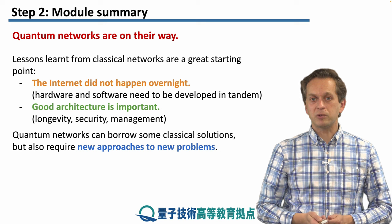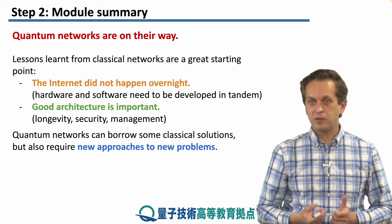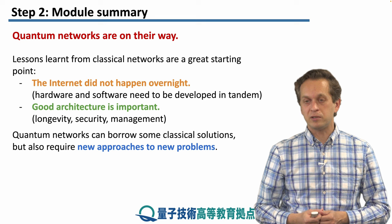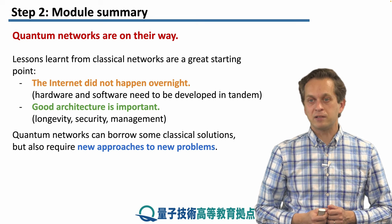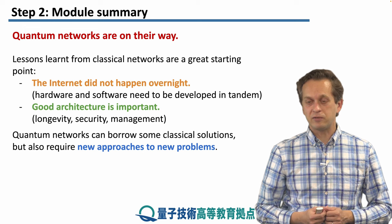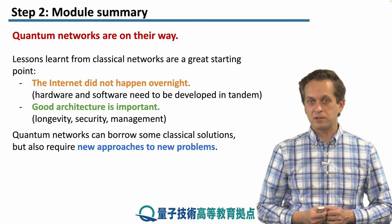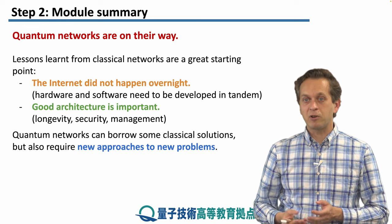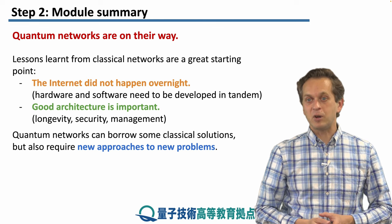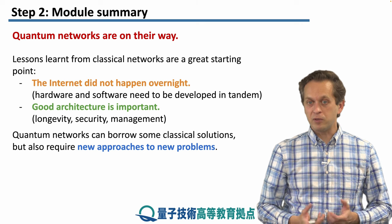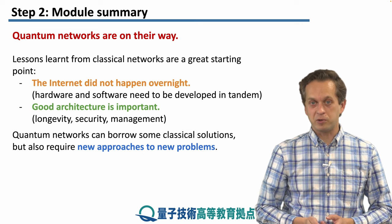Quantum networks can borrow a lot from classical solutions, and we tried to demonstrate it throughout this module. But at the same time, quantum networks differ in some respects quite substantially from classical networks. Classical networks are all about forwarding packets. Quantum networks are all about distributed computation. So these new problems require also new approaches.